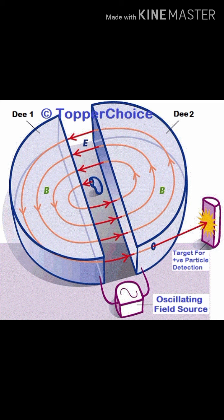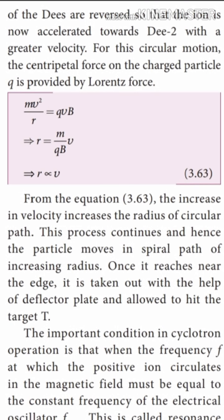When the negative potential is applied, the particle travels a semicircular path with greater radius and greater velocity. Each and every time, the polarities of the Ds get reversed so that the ion is now accelerated towards the negative potential D with a greater velocity. For this circular motion, the centripetal force on the charged particle Q is provided by the Lorentz force.